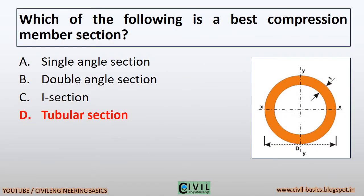Which of the following is the best compression member section? Tubular section is the best compression member section. A tubular section is most efficient and economical for a column free to buckle in any direction. The radius of gyration R for the tubular section in all directions remains the same. The tubular section has high local buckling strength and is suitable for medium loads.